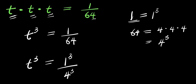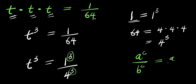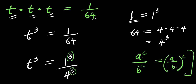So right now we have power of 3 here and we have power of 3 here. Consider this identity: if you have a to the power of c divided by b to the power of c, this equals a divided by b, all raised to the power of c. So we are going to apply this identity.